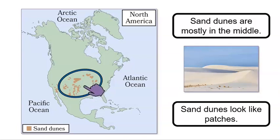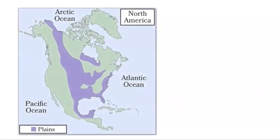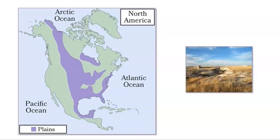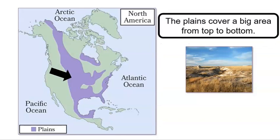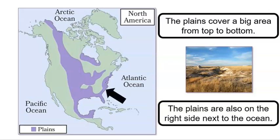Now that we know where there are mountains and sand dunes in North America, let's look at our third map. This map shows the plains in North America. Plains are large areas of mostly flat land. Where do you see plains on the map? I noticed that the plains cover a big area that goes from top to bottom in the middle of the continent. There are also plains on the right side of North America next to the Atlantic Ocean.